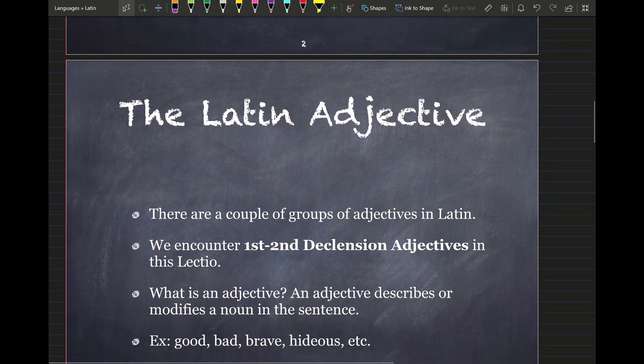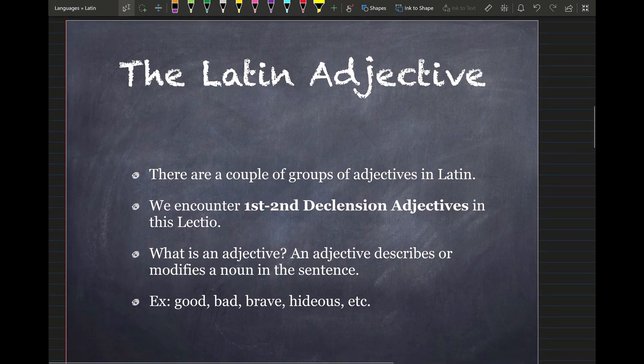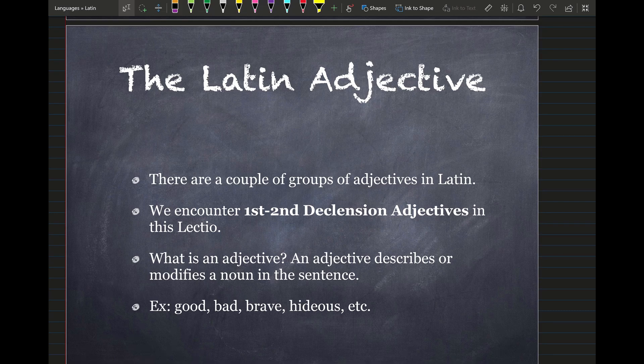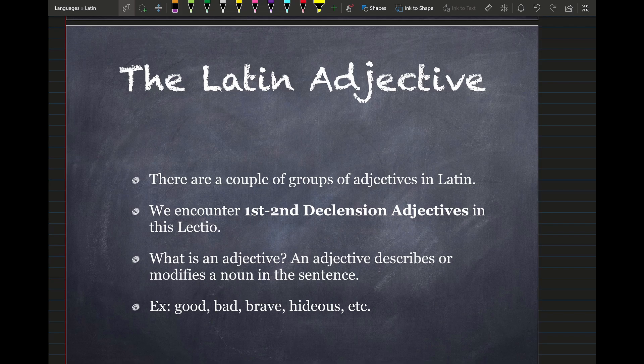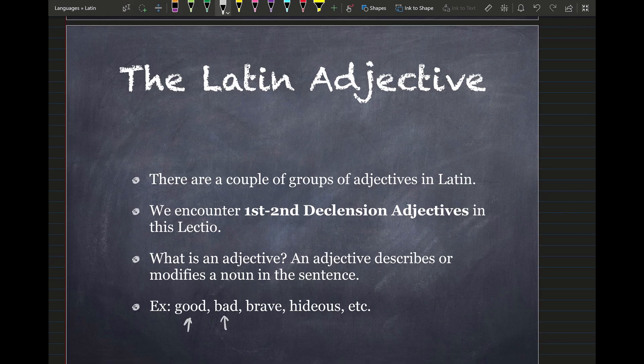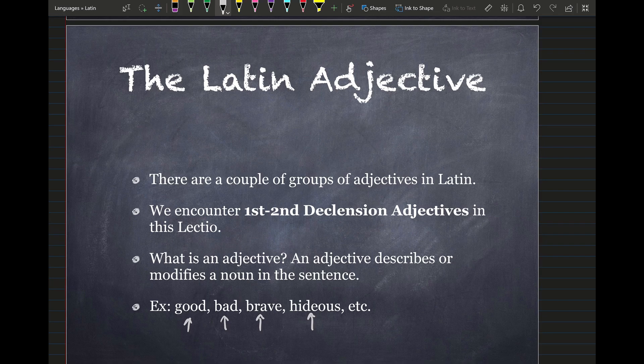Continuing on. Now we need to talk about the Latin adjective. There are a couple groups of adjectives in the Latin language. The first one we're going to encounter is called the first slash second declension adjectives. What is an adjective to begin with? What do we need to know about an adjective? An adjective describes or modifies a noun in the sentence. So examples of adjectives are down here: Good, bad, brave, hideous, etc.